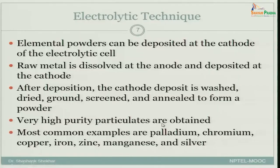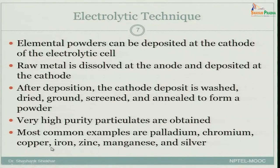Very high purity particulates can be obtained because the raw material you may be using can have contaminants. But depending on the voltage used, only that particular element will be dissolved, travel through the electrolyte, and get deposited onto the cathode. The most common examples are palladium, chromium, copper, iron, zinc, manganese, and silver.